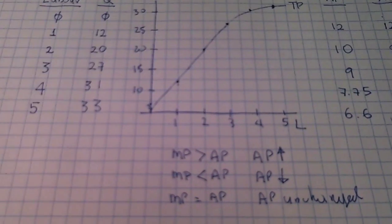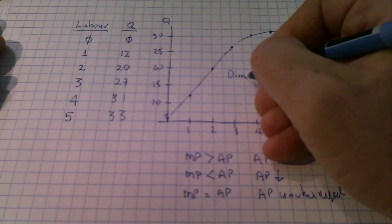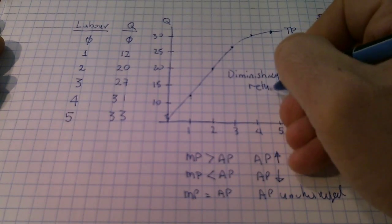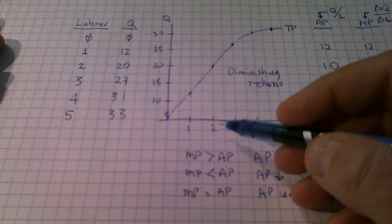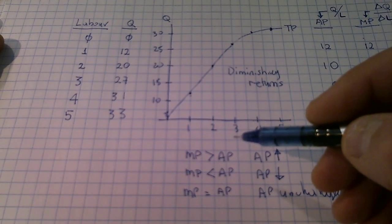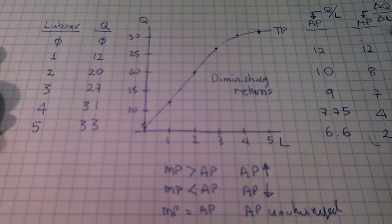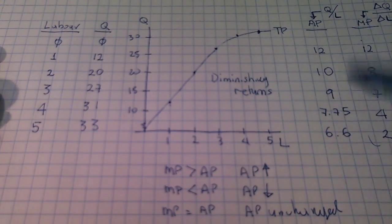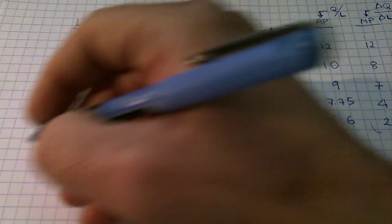So those are the concepts students seem to understand: the law of diminishing returns, which is basically that as you increase labor onto a fixed factor of production, eventually the additional worker will produce less than the previous worker — total production goes up, but at a declining rate. I also ask them to graph the relationship between average productivity and marginal productivity.